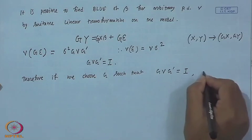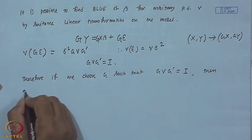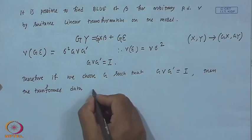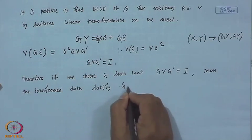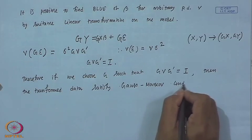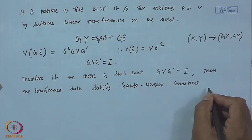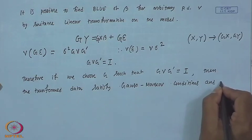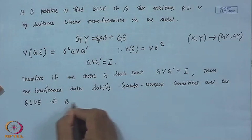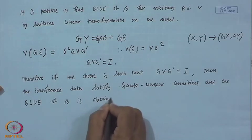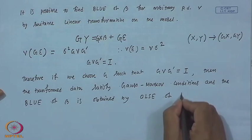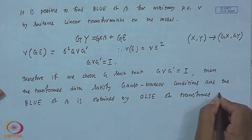Therefore, if we choose G such that GVG' = I, then the transformed data satisfy the Gauss-Markov conditions, and the Best Linear Unbiased Estimator of β is obtained by applying the ordinary least square estimator to the transformed data.